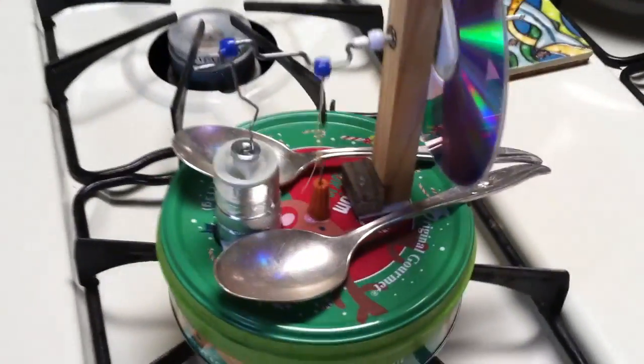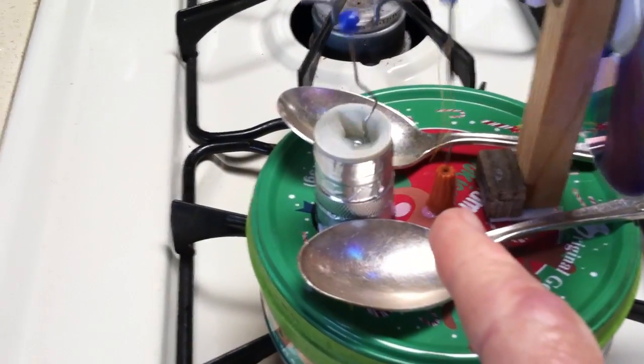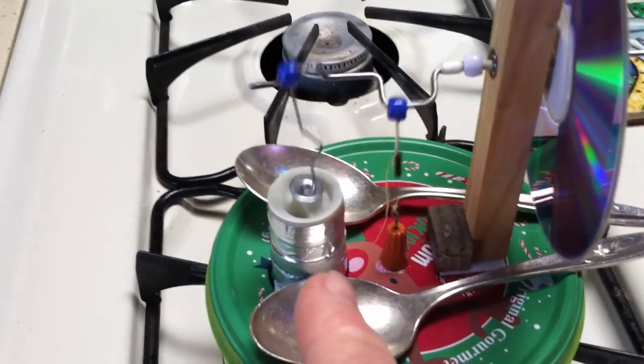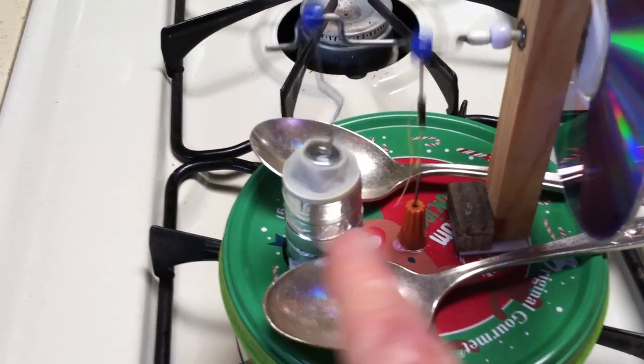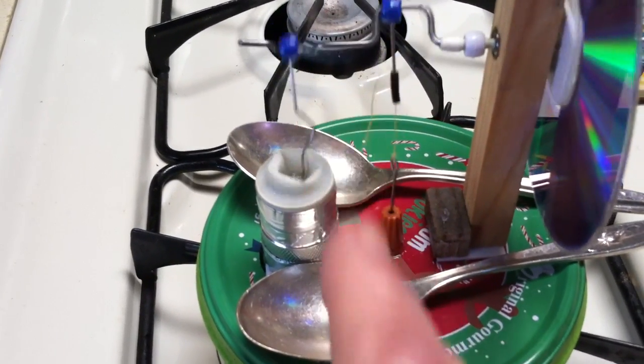Otherwise this thing starts oil canning. And you can see the movement back and forth there. That's this top of the can reflexing up and down. So if I refine this, what I've got to do is make some sort of structure here that keeps the lid from reflexing up and down.